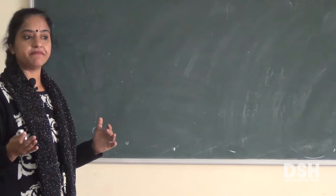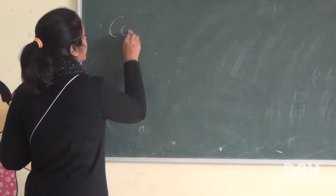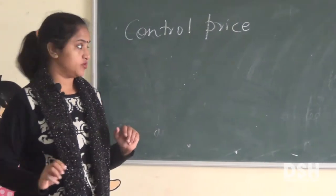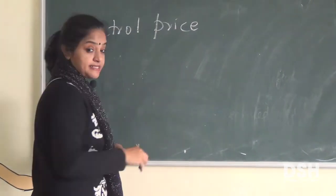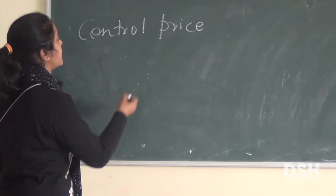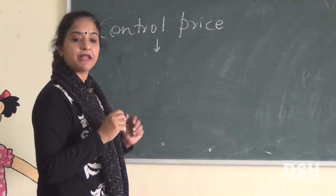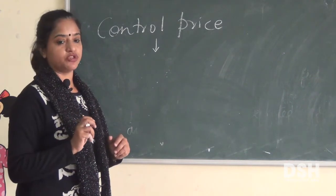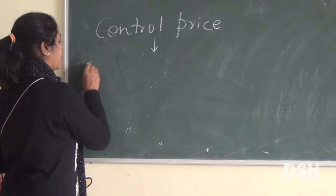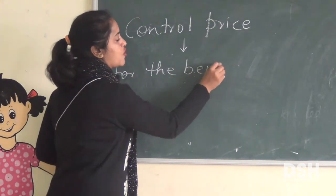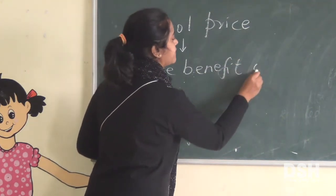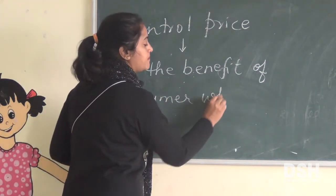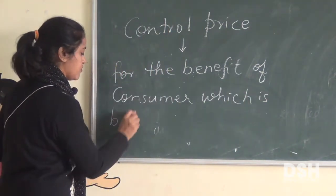You have heard that there are ration shops and there are control prices. What is the control price? In the last chapter, we discussed equilibrium price — the price where demand and supply meet. The control price is different from the equilibrium price. It is a price fixed by the government for the benefit of the consumer, and it is below the equilibrium price.